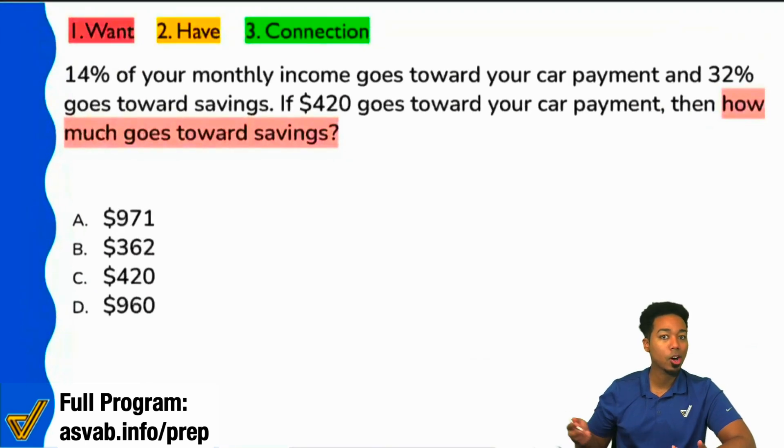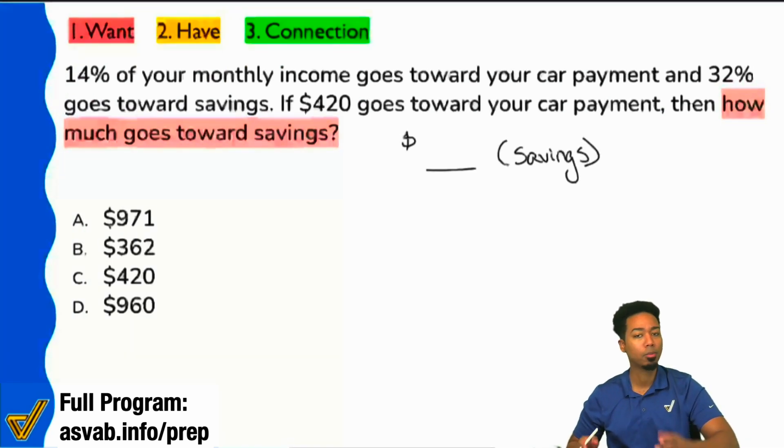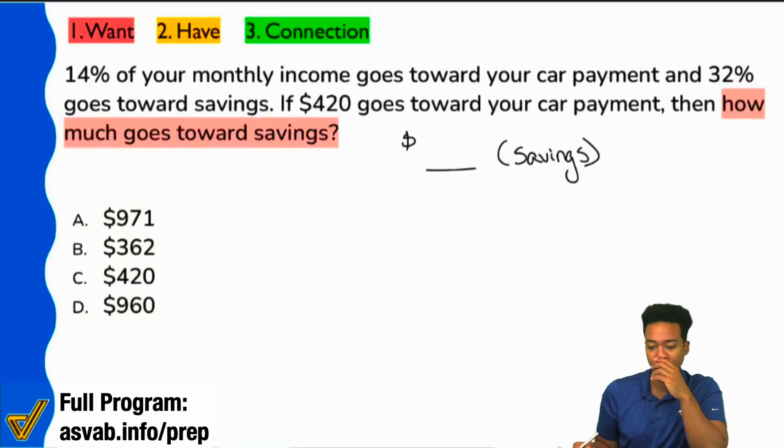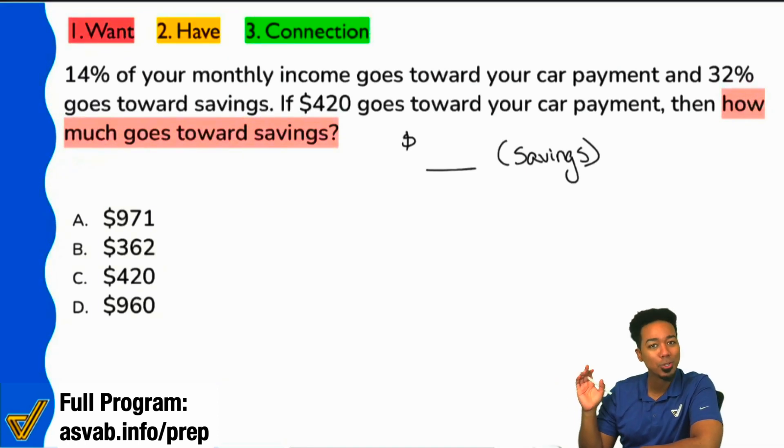So I think we can all go ahead and say that we're looking for the dollar amount that represents savings. And I don't think anybody here said that they had a problem identifying the actual question. So are we good to move on? Again, we're looking for the dollar amount that corresponds to savings. And look, I didn't have to read the whole problem for that. You can go straight to the question sentence and understand what you're looking for.